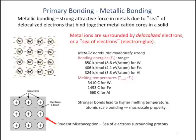Many material properties such as melting point, elastic modulus, and coefficient of thermal expansion are directly related to the type of bonding a material has. We need to be able to differentiate between the types of bonding in order to better understand why materials with certain bonding have certain properties.